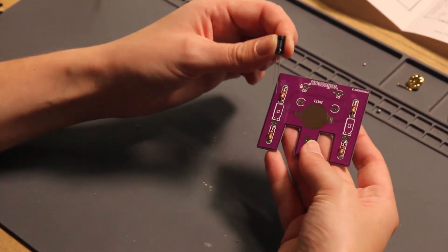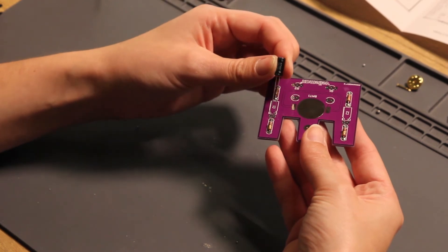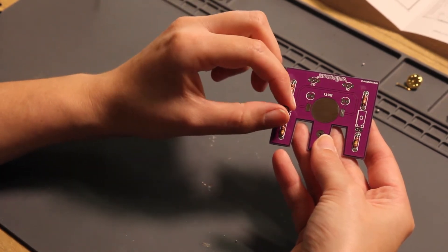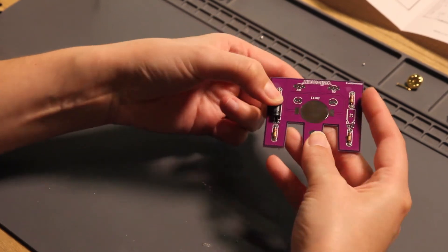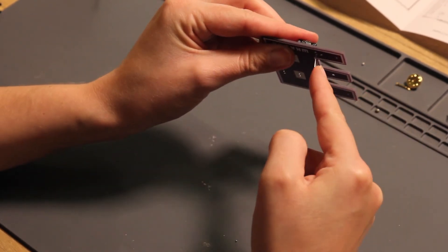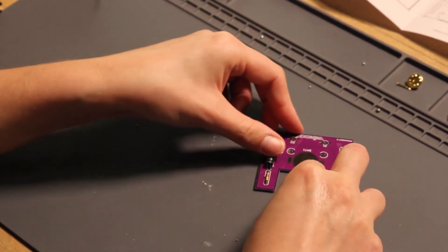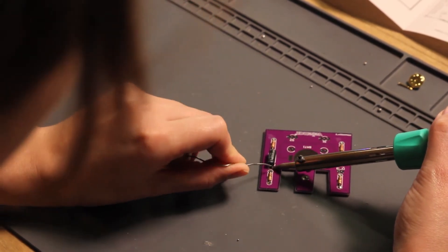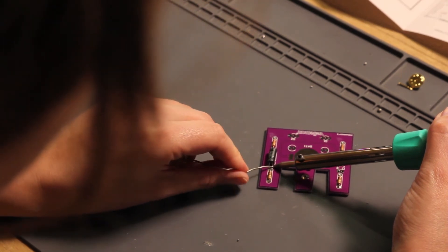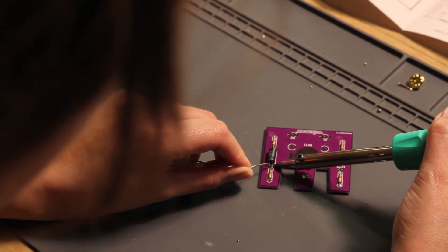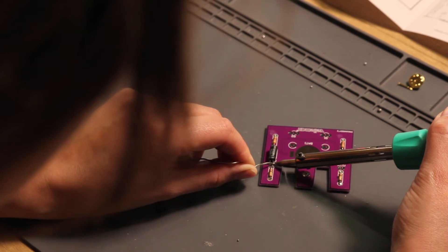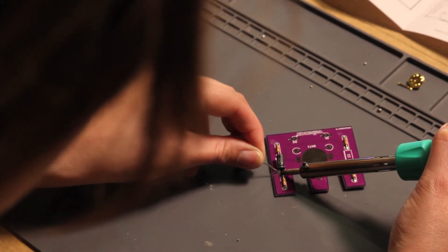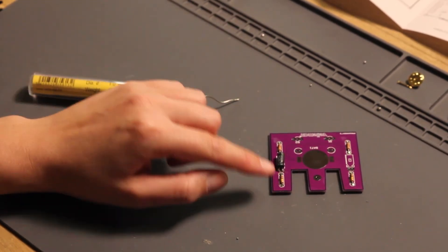When we put the capacitor into the PCB, we need to make sure that the long leg is positioned in the positive side and the short leg is positioned into the negative side, like this, in C1. Once it's positioned, you can bend the component like this and then bend the leads backward so we can start soldering.